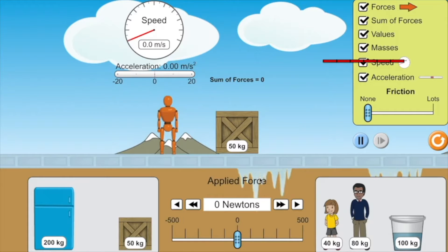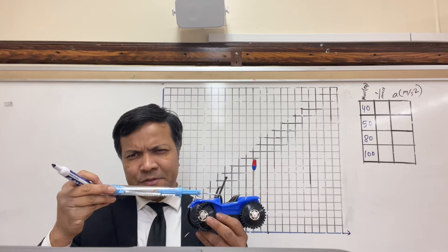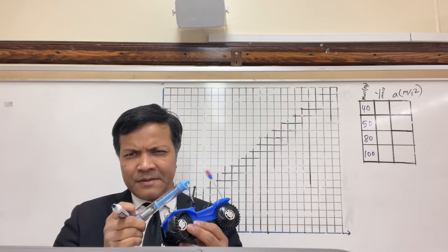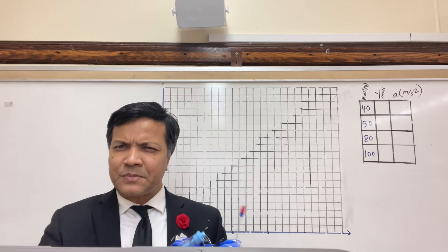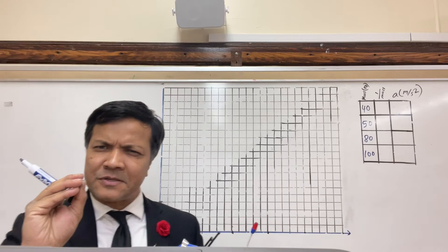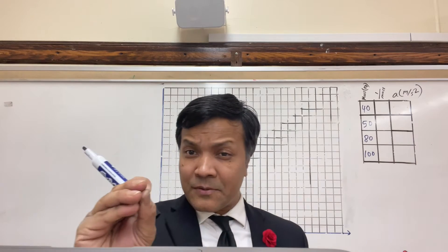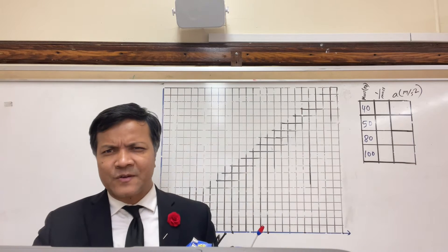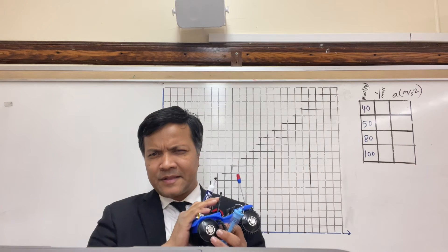In this lab, I want you to first drag 40 kilograms and then see what the acceleration is, then 50 kilograms, then see what the acceleration is, then 80 and 100, and see what the acceleration is. You're going to keep changing the mass of the object from 40 kg to 50 kg to 80 kg to 100 kg, and see how that affects the acceleration of the car.